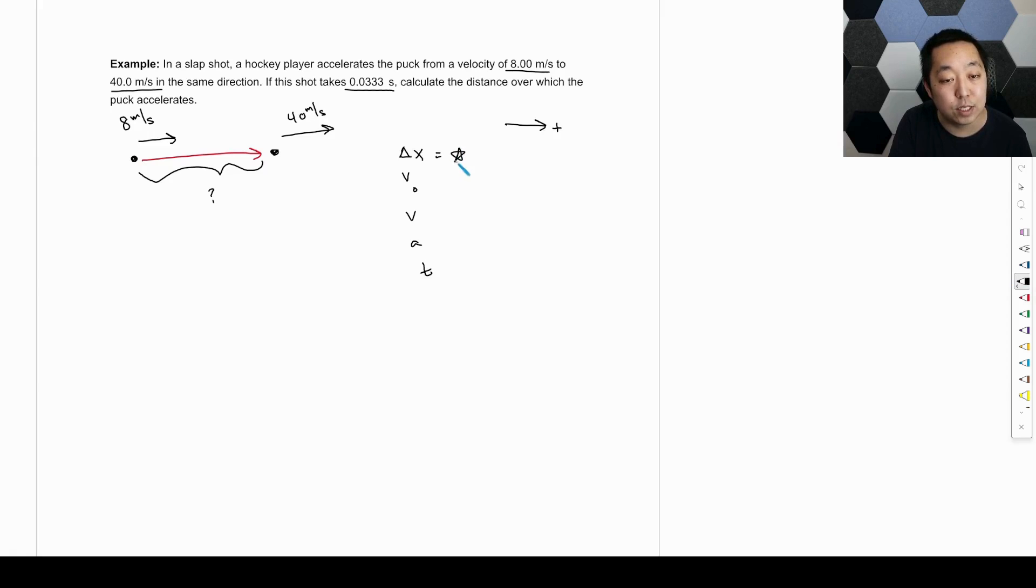We're looking for the displacement vector because the length of that vector is going to be how far we travel. The initial velocity is at the start of the motion. So it started at eight and it's pointing to the right and right is positive. So we'll make that eight meters per second. Final velocity, the velocity at the end of that motion, it's going 40 meters per second. We're calculating, we want to know the distance, the acceleration we don't know. This is not given to us in the problem, but we know the time it takes 0.0333 seconds.